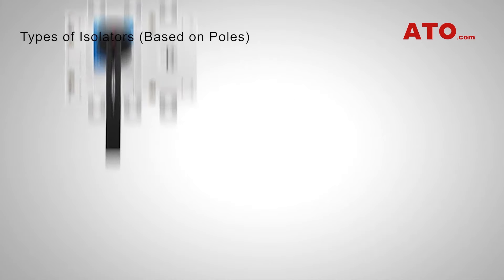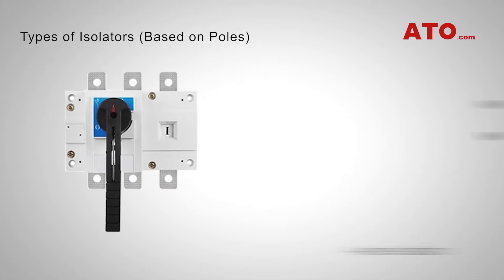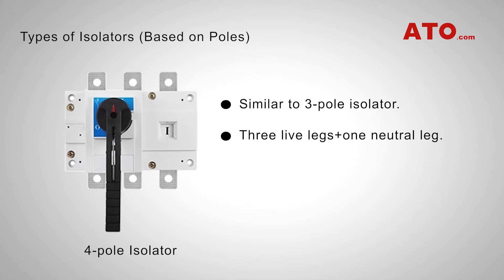Four pole isolator switches share some similarities with the three pole type, but in addition to the three live legs, it has another neutral leg.